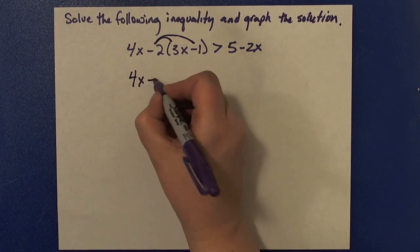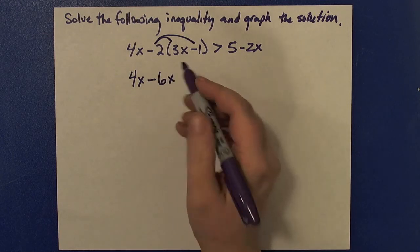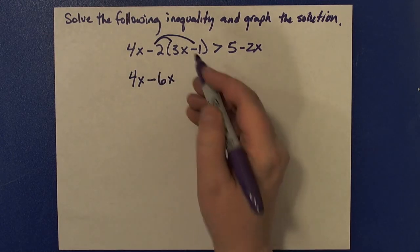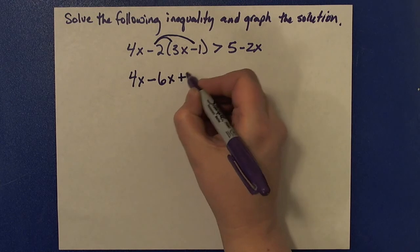Negative times a positive gives me a negative, or minus 6x. And a negative times a negative gives me a positive, plus 2.